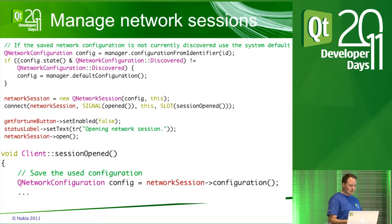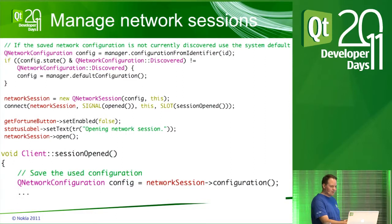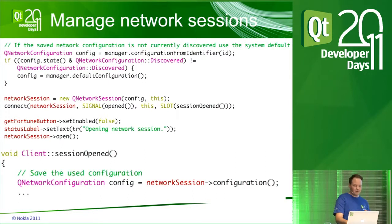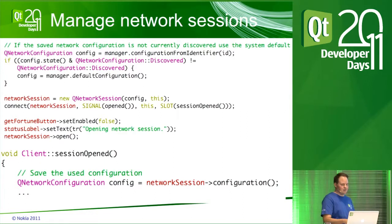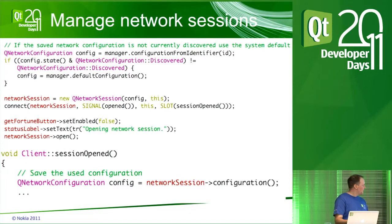In the N9, the default configuration will be the user's choice, and on Symbian it's usually the internet service network. The Fortune Client example in the Qt SDK first takes a saved configuration and then, if that's not available anymore, gets the default configuration. Once it gets the open signal, it will save the configuration for later use.